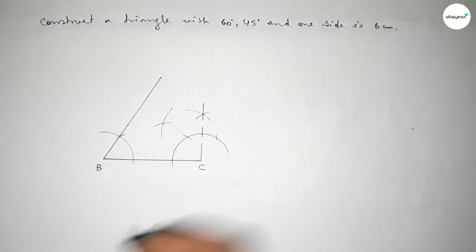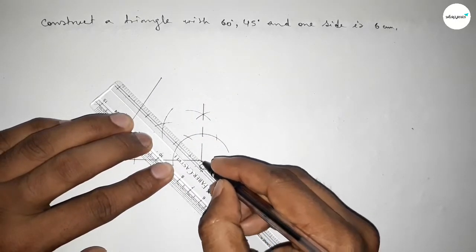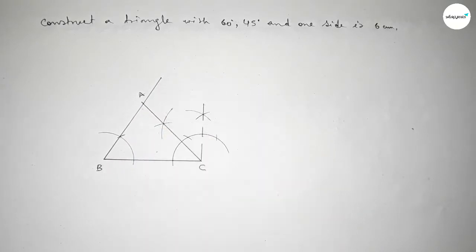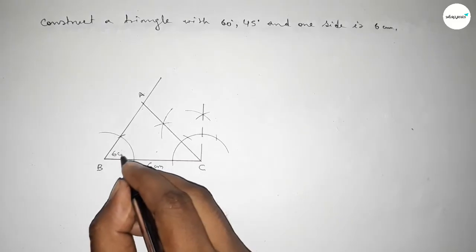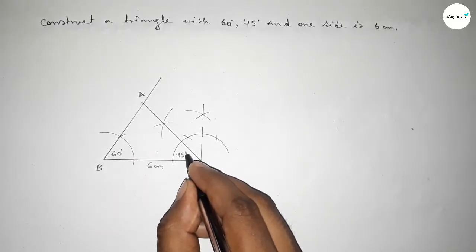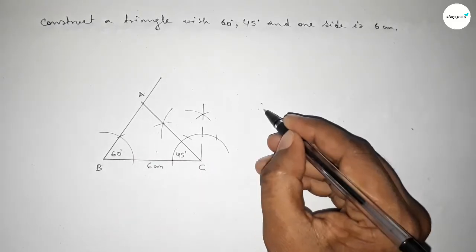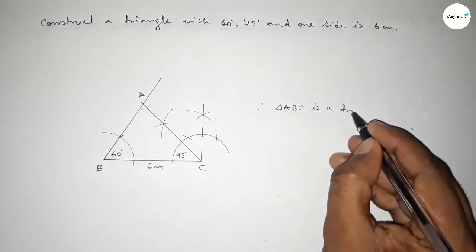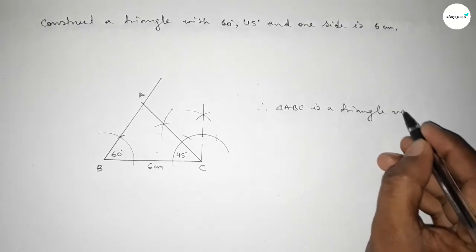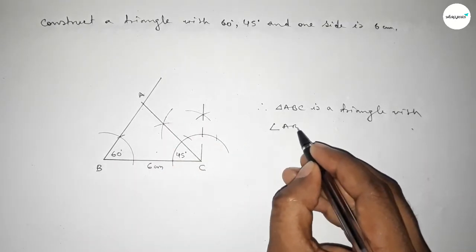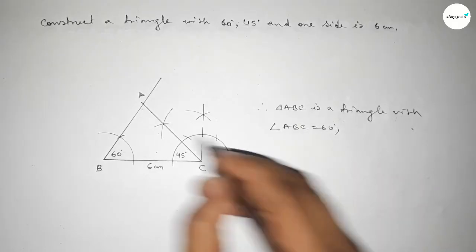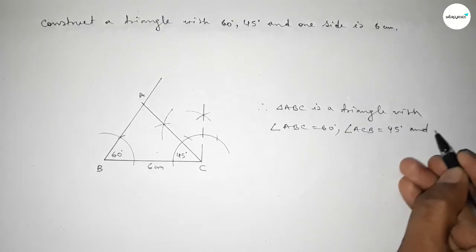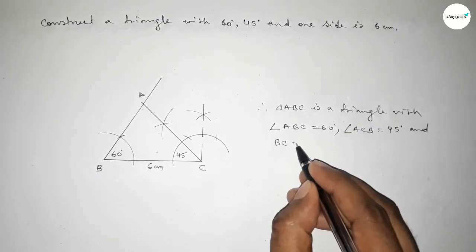Both lines intersect at point A. This is 6 centimeters, this angle is 60 degrees, this angle is 45 degrees. Therefore triangle ABC is a triangle with two given angles: angle ABC equal to 60 degrees, angle ACB equal to 45 degrees, and given one side BC equal to 6 centimeters.